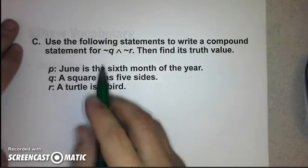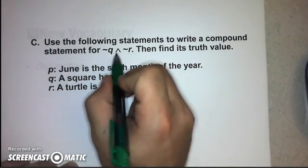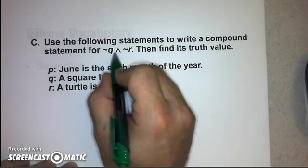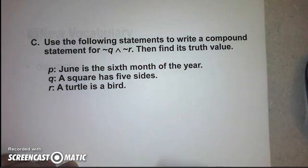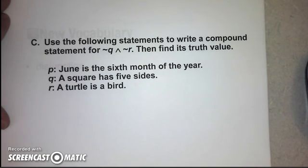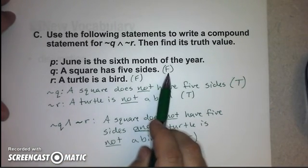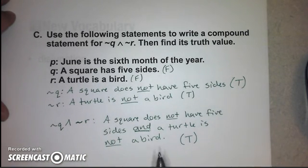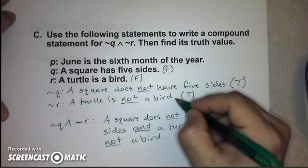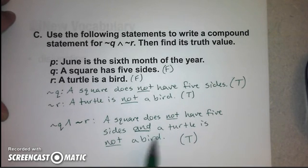Now, using three new statements, we write the conjunction of not Q and not R. Statement Q, 'a square has five sides,' is false, so the negation of Q — 'a square does not have five sides' — is true. Statement R, 'a turtle is a bird,' is also false, so the negation of R — 'a turtle is not a bird' — is true. The compound statement reads: 'a square does not have five sides, and a turtle is not a bird.' Since both individual parts are true, the conjunction is true.